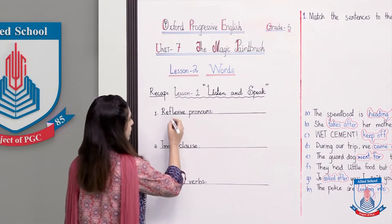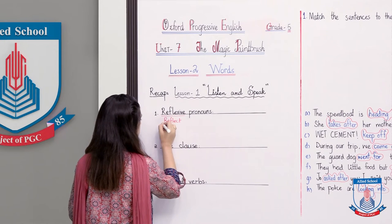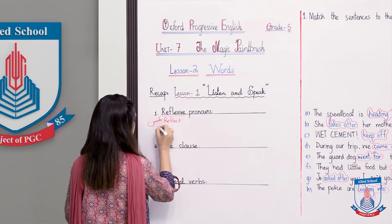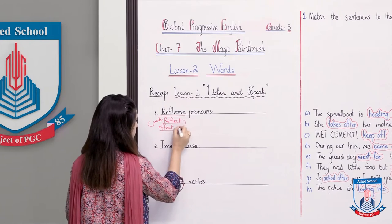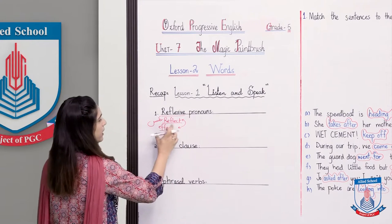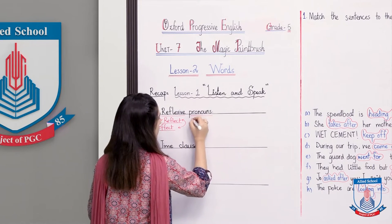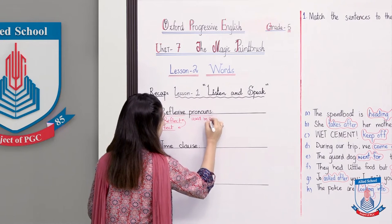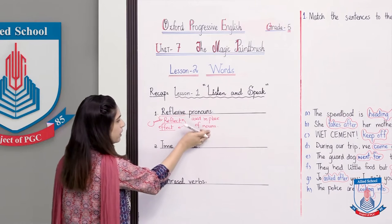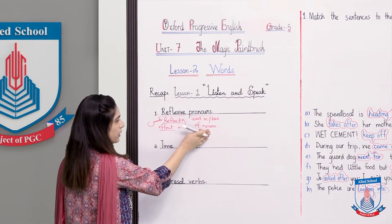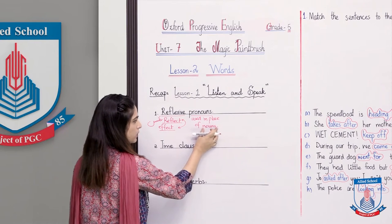We will revise the reflexive pronoun. The word 'reflexive' came from the word 'reflect,' which means when we do something, the action reflects back. We will write it in simple words so that we understand. This word is related to pronouns — we have said that pronouns are used in place of nouns. When we talk about nouns, we write the noun once, and then in the following sentences we use pronouns instead.